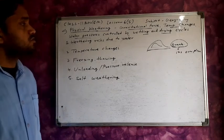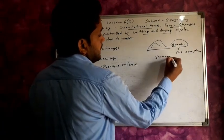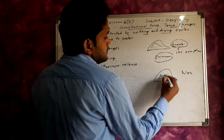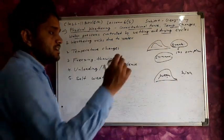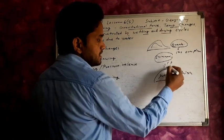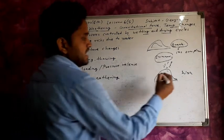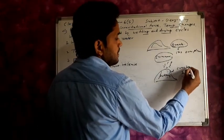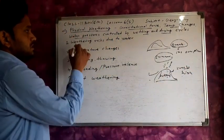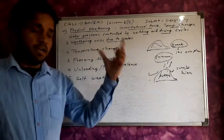First, we discuss weathering due to water. In summer, the temperature of rocks is high — the rocks are warm. When rainfall occurs on these warm rocks, the temperature circulation becomes unbalanced and cracks start to form in the rocks at their own place. This process is known as weathering due to water.